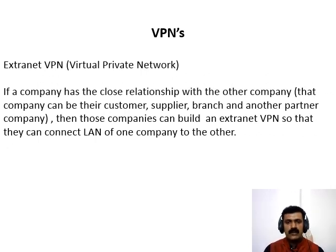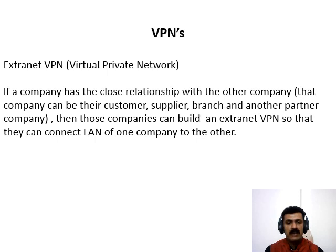The third type is extranet VPN. If a company has a close relationship with another company — such as a customer, supplier, branch or partner company — then those companies can build an extranet VPN so that they can connect the LAN of one company to the other. It allows all of the companies to work in a shared environment. The extranet VPN facilitates e-commerce.